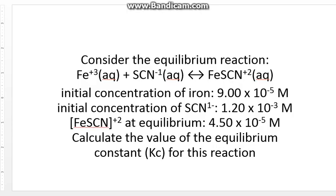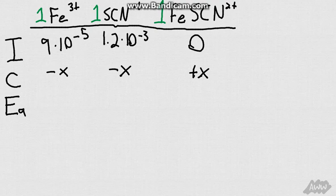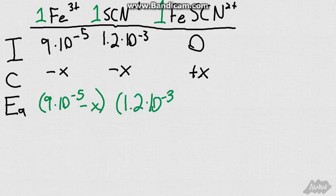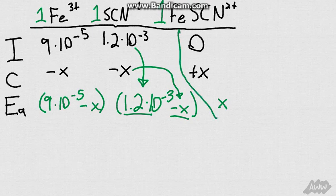So what are our equilibrium concentrations at this point? To do that, we just have to add these two together. So we get 9 times 10 to the negative 5th minus x for the equilibrium concentration of iron. We get 1.2 times 10 to the negative 3rd minus x for SCN. And for FeSCN, we are just going to simply have x.